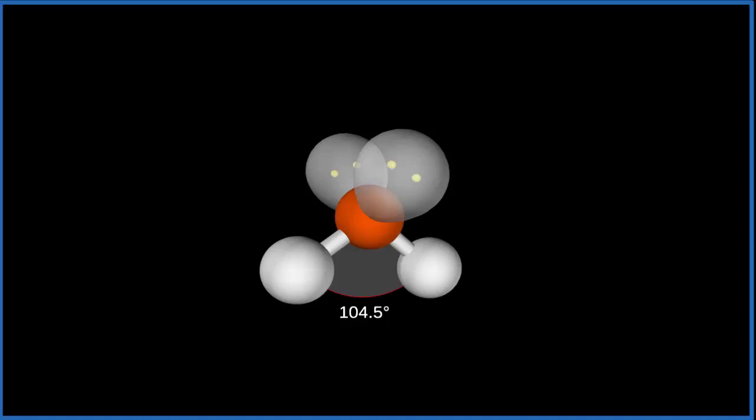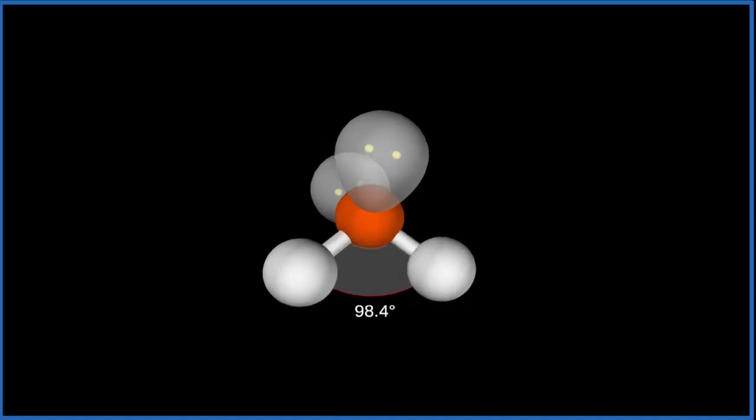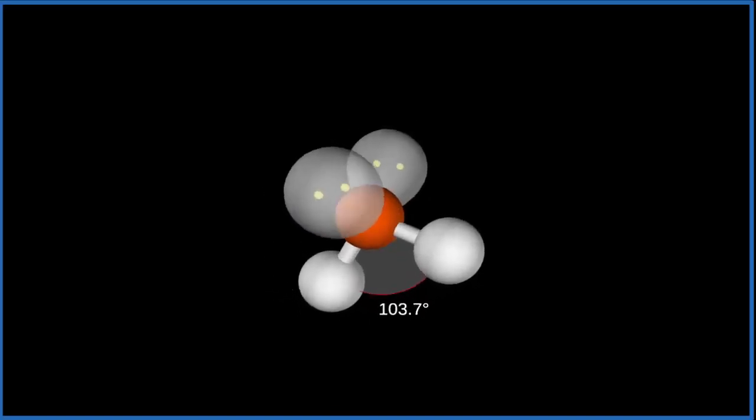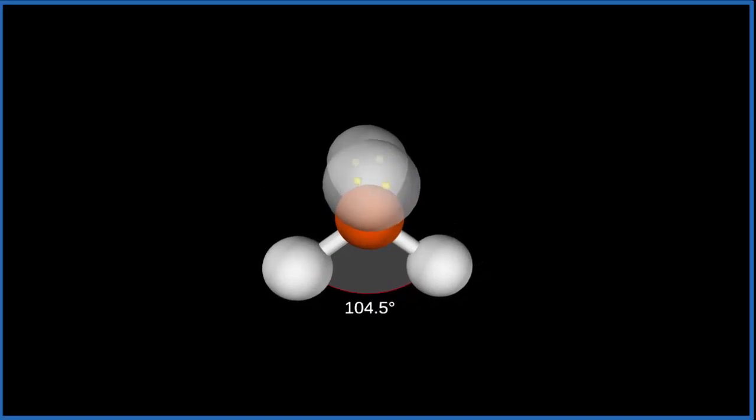So the bond angle for H2O, it's less than 109.5. And that's because when we look at lone pairs like these lone pairs on the top, they actually repel more than these hydrogen atoms. They repel a little bit more.